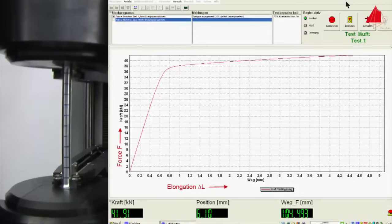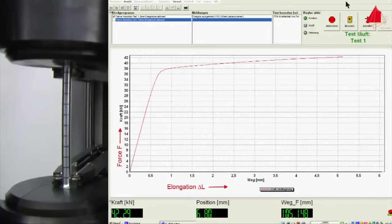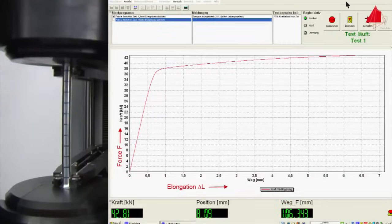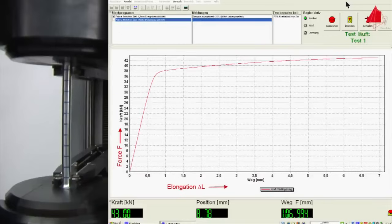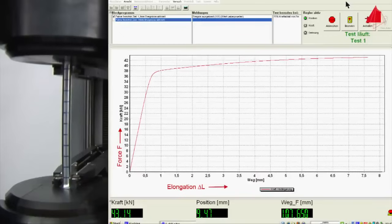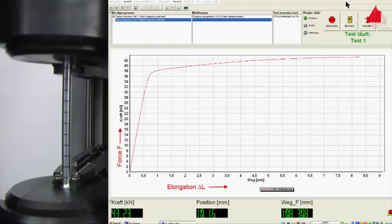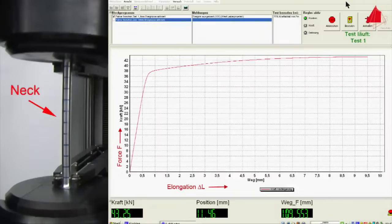In the further course of the tensile test, the force increases and the test piece again is strained uniformly along its length. At the point of maximum force, a neck develops and all subsequent plastic deformation is confined to this neck until fracture finally occurs there.